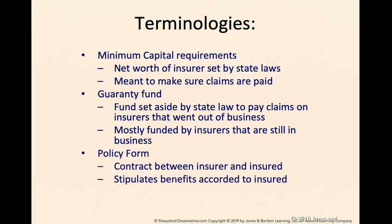A policy form is simply your contract — a piece of paper that is a contract between the health insurance company and you, the insured. It stipulates the benefits accorded to you. If you are in a group coverage, this policy form is maintained by your employer, and all within that group will receive the same benefits. Around September or October, you receive a pamphlet from your employer giving you options so you can make the right choices about what type of health plan or coverage you need for you and your family.